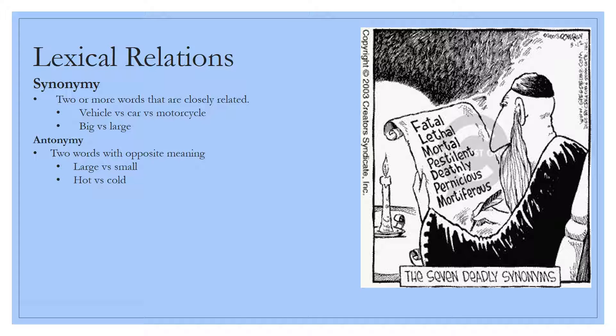Moving on from semantic roles, we're now going to talk about lexical relations. There are many different categories within this. The first topic is synonymy, which is two or more words that are closely related but not necessarily exact. So words that can go together like vehicle and car, large and big, small and tiny, and so on and so forth.